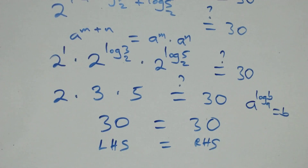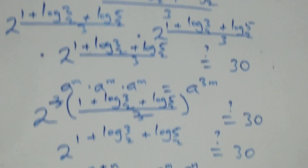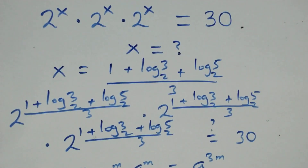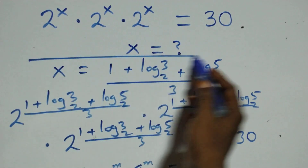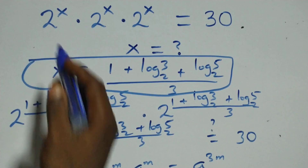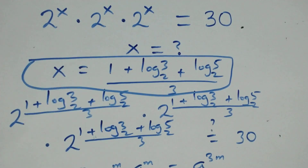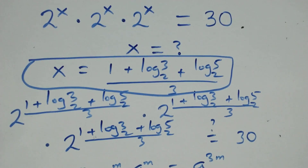Therefore, we conclude that x equals one plus log three base two plus log five base two, all over three, satisfies the given problem. Thank you for watching — don't forget to subscribe for more videos, turn on the notification bell, share this video, give a thumbs up, and put your comment. See you in the next class!